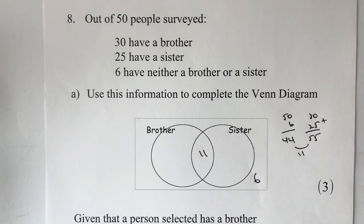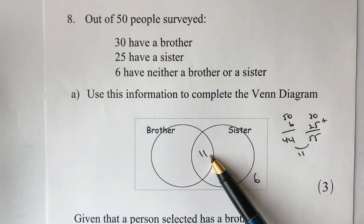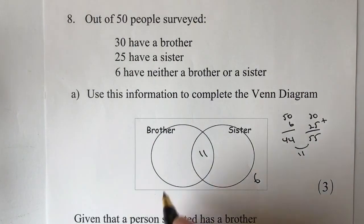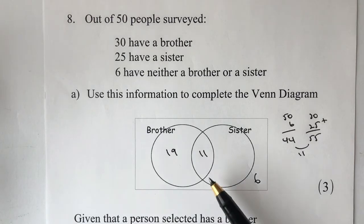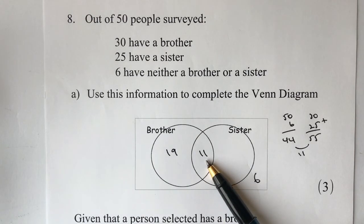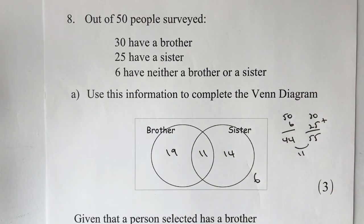We're now in a position to complete the rest of the circles. For brother: 30 have a brother, 11 have already been accounted for in the middle, so there must be 19 who have brothers only. For sister: there are 25 who have a sister, and 11 are already in the middle, so 11 plus 14 equals 25 — giving us 14 who have sisters only.